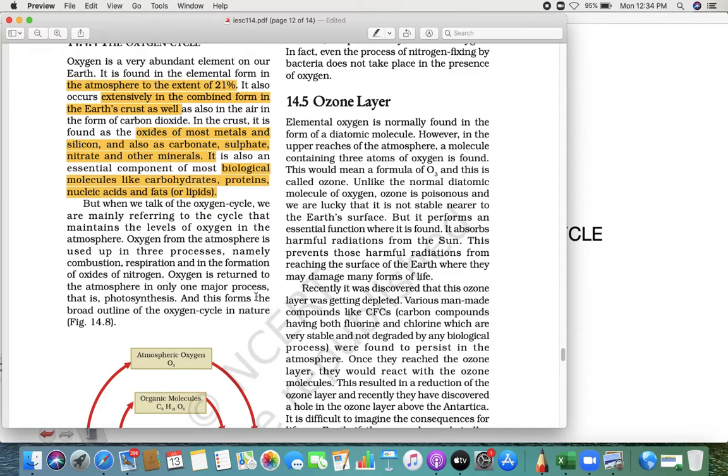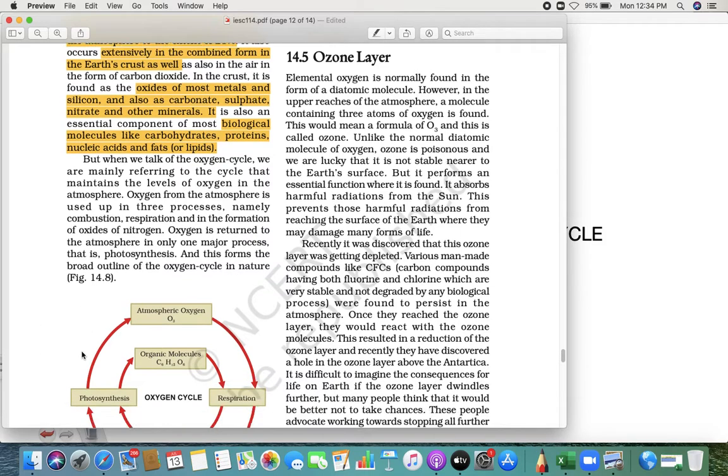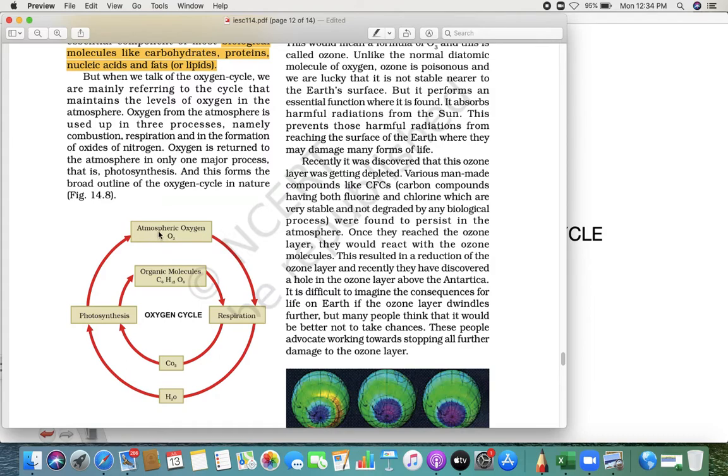We know that the plant inhales carbon dioxide and exhales oxygen, and we people inhale oxygen and exhale carbon dioxide. See, if you see in this one, the atmospheric oxygen goes to respiration—we human beings take it. Then if you see the inner cycle, respiration gives carbon dioxide, photosynthesis happens, it goes back to the atmosphere. Now you know what is this C6H12O6? That is a glucose molecule which breaks down during respiration and CO2 is released. So this is what the process happens during oxygen.